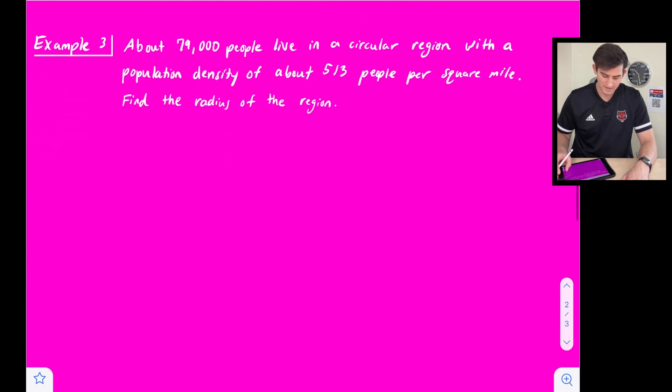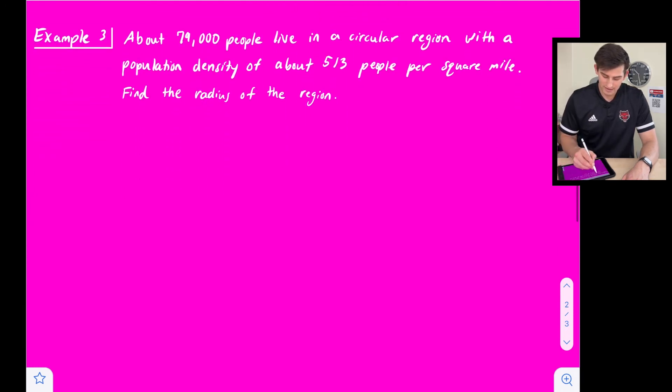All right, in our last example, about 79,000 people live in a circular region with a population density of about 513 people per square mile. Find the radius of the region.